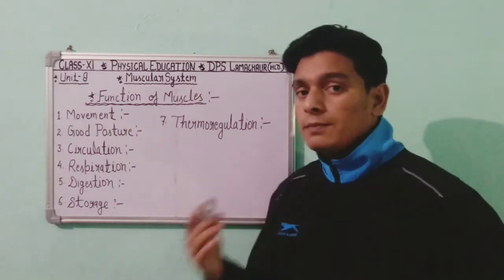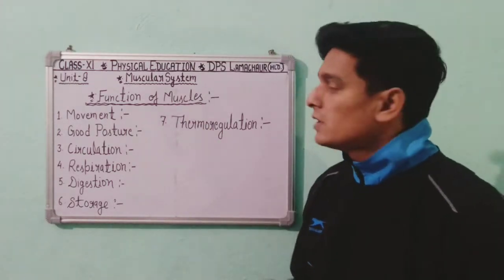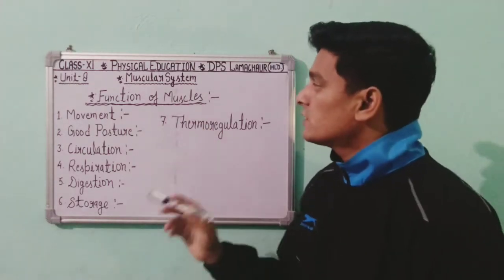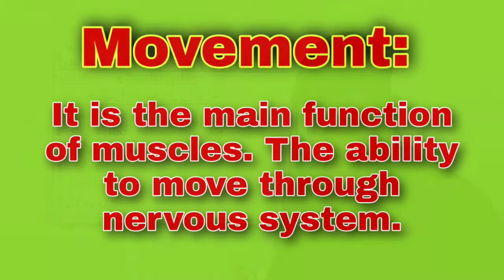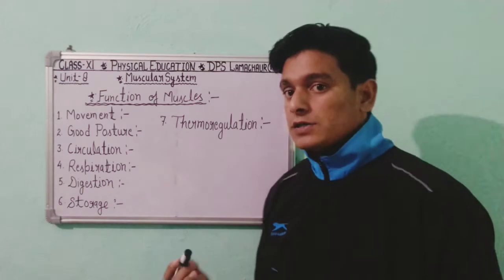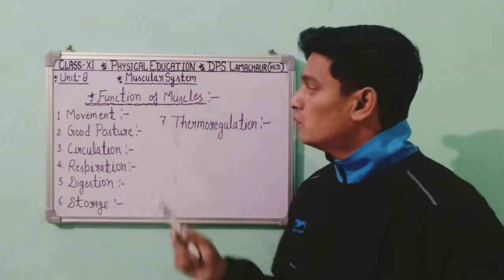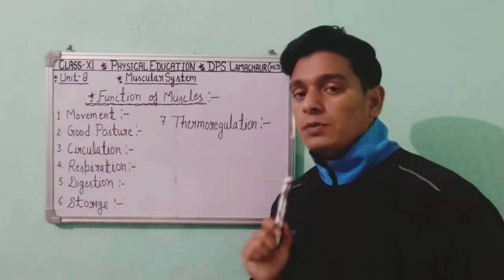Now let's know about the functions of muscles. The first function is movement. Movement is the main function of muscles — the ability to move through the nervous system. With the help of the nervous system, our body and body parts are able to move.